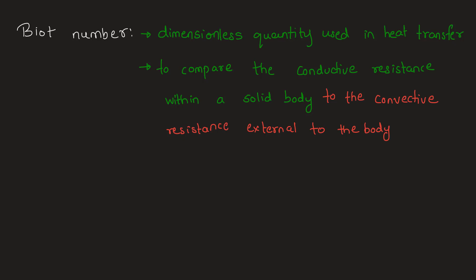In order to compare these two types of terms, we use Biot number. The formula is: Biot number equals conduction resistance upon convection resistance, given by HL/K. This is derived by taking the ratio of conductive resistance to convective resistance, where H denotes the convective heat transfer coefficient, L denotes the characteristic length of the geometry under consideration, and K denotes the thermal conductivity of the solid.